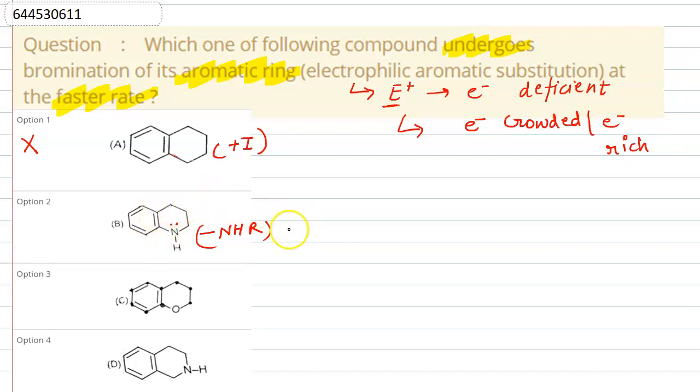And also this NHR group shows plus M and plus R effects. So that's why this will be electron rich and this electrophilic aromatic substitution can undergo in this group with faster rate.